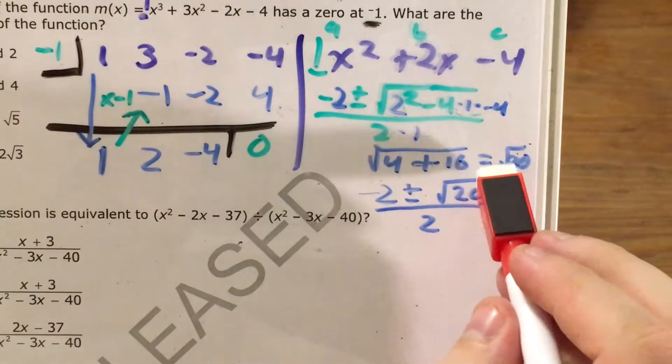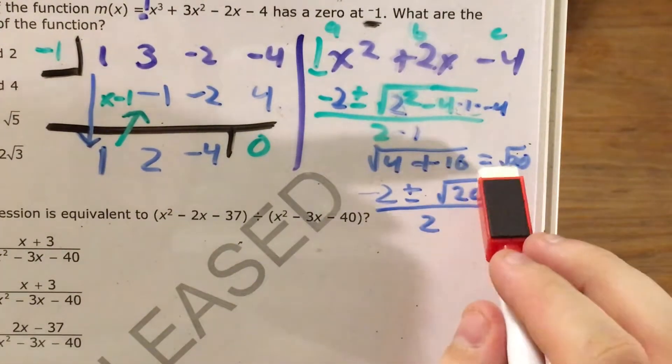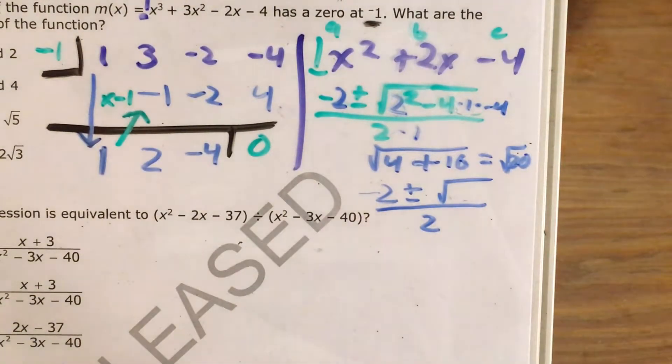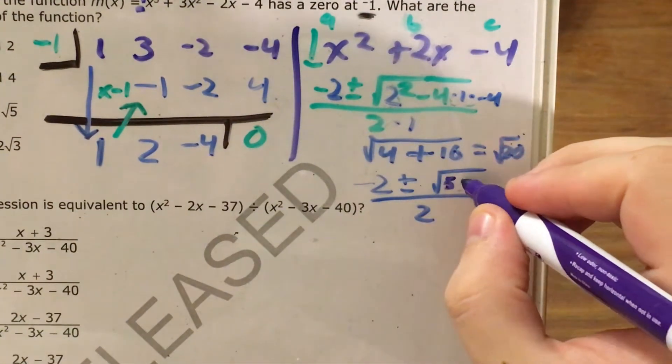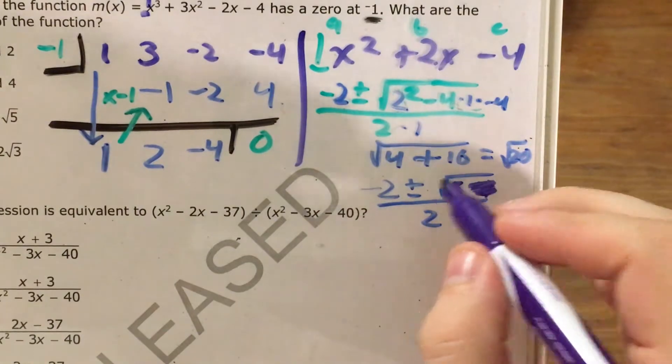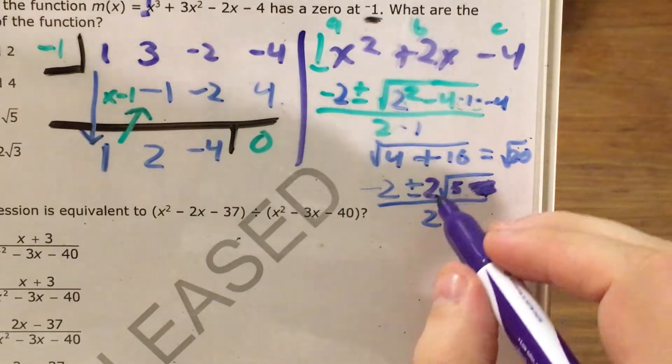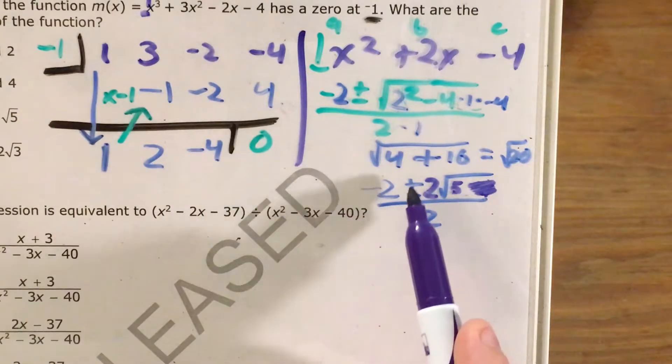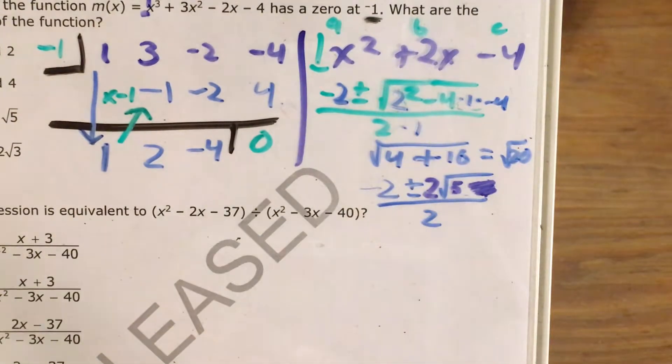So now this becomes negative two plus or minus the square root of 20 all over two. I'm going to do something a little strange to the square root of 20. I'm going to recall that it's actually the square root of five times four. And I'm actually going to be able to pull this four out of here, pull it out of the square root, and turn it into its square root, which is two. So now I have negative two plus or minus two root five all divided by two.